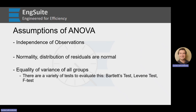The last assumption is equality of variance of all groups. There are a variety of ways to evaluate this. QE Suite gives you a couple — the Bartlett's test, the Levine test, and the F test. The F test is available in Excel, but it only tests between two different groups, whereas Bartlett's and Levine will both test more than just two treatment groups.